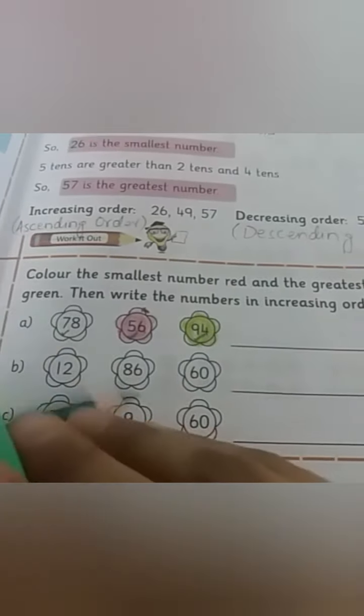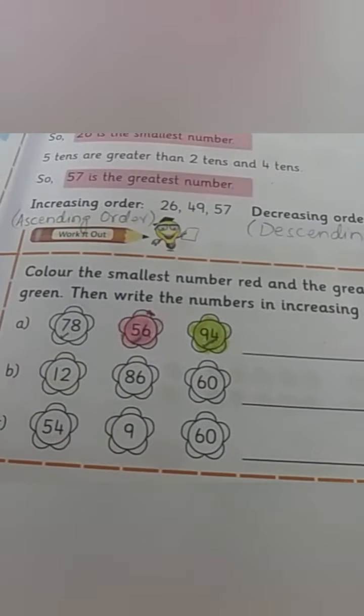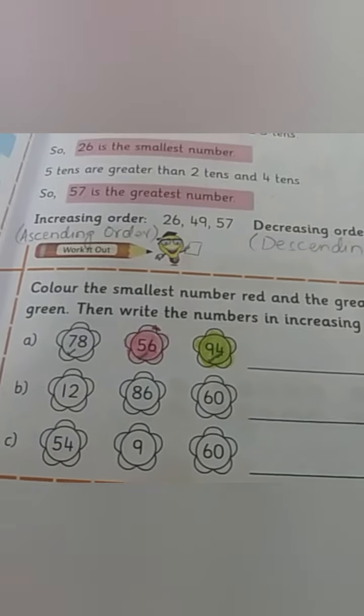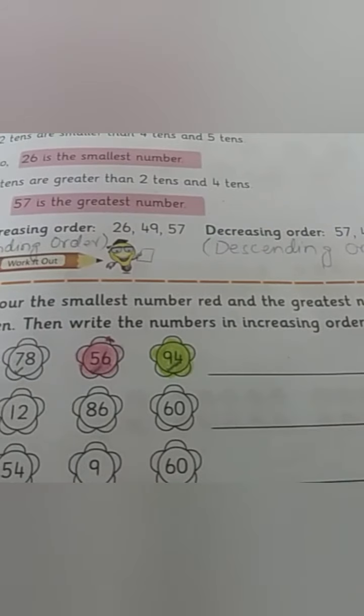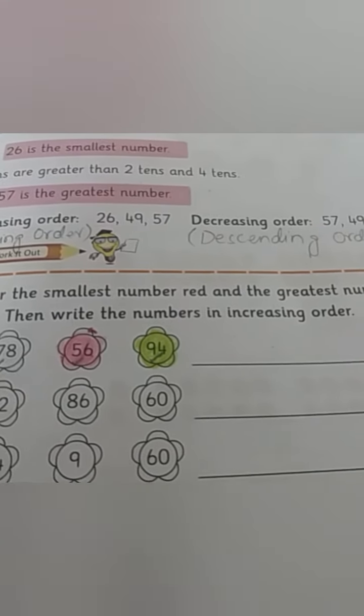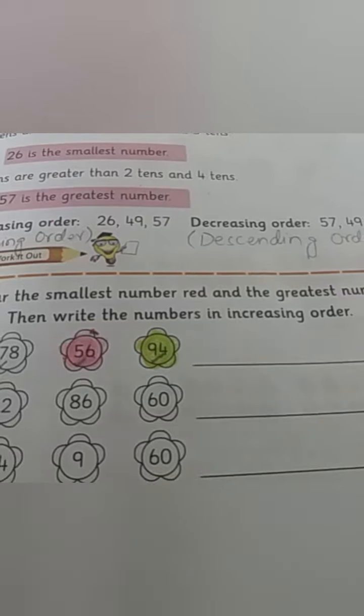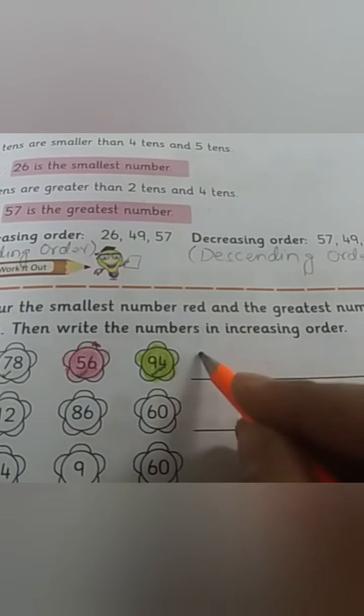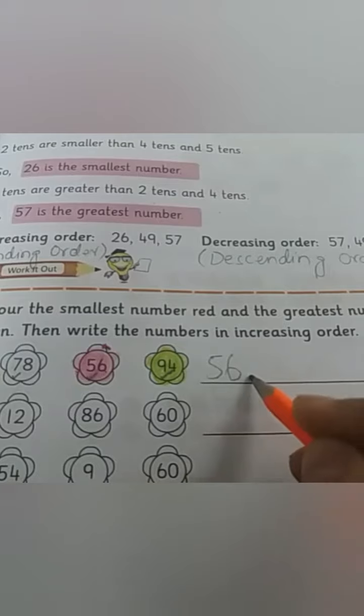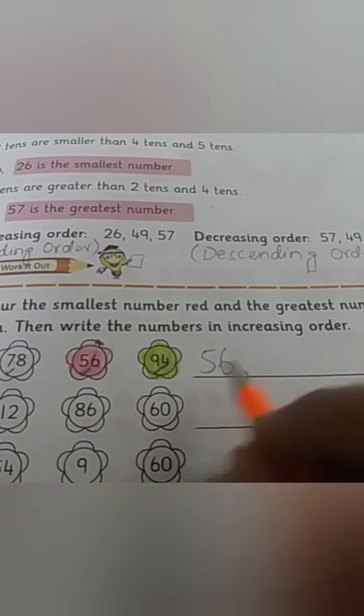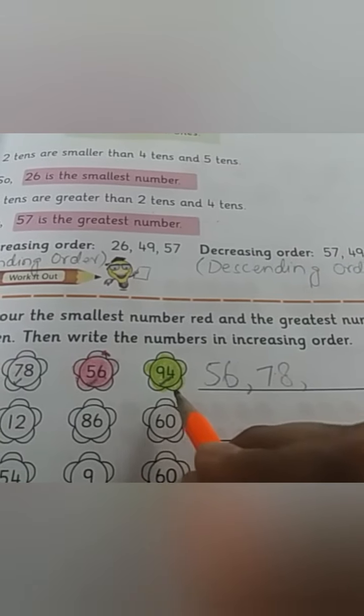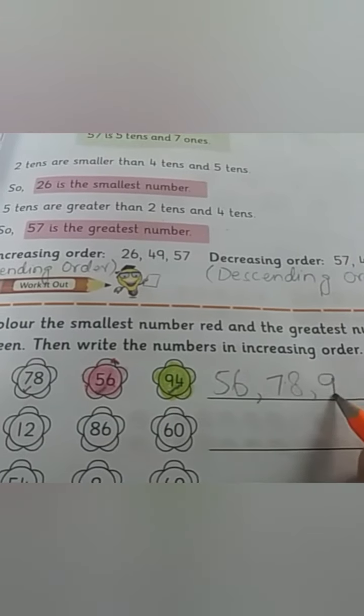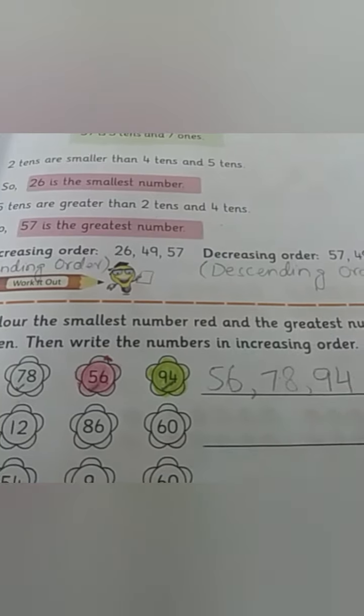Now let's arrange in increasing order. Increasing order means ascending order, jis mein hume sab se chota pehle ne likhna hoga. Smallest one. Which one is smallest? 56. Then we will write 78, aur aakhir mein sab se bada, greatest, that is 94. Do you understand now?